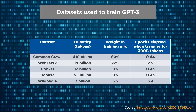Web Text, with 19 billion tokens, contributes 22% of the training data. You can also see the breakdown for Books 1, Books 2, and Wikipedia with their respective token counts, weight in the training matrix, and epochs elapsed when training for 300 billion tokens.